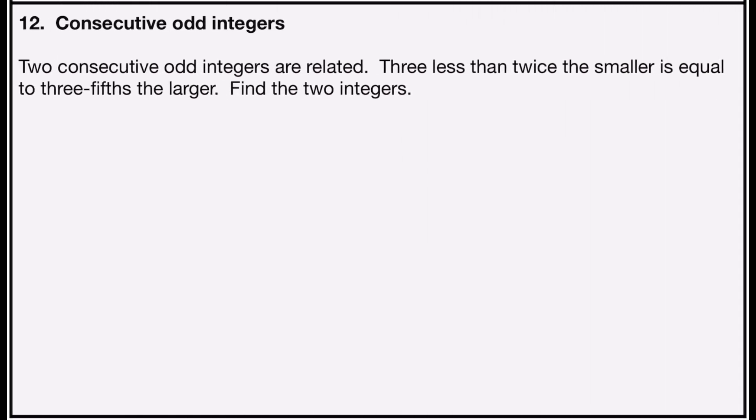Problem number 12 is consecutive odd integers. It says two consecutive odd integers are related: three less than twice the smaller is equal to three-fifths the larger. Find the two integers. Just like consecutive even integers, consecutive odd integers are also two spaces apart on the number line. So when I define the variables or expressions, it's exactly the same as for even integers. The first integer is x, and the next odd integer will be two away, or x plus two. Notice the two is an even number, but it represents the space on the number line, not the integer I'm looking for. Consecutive odd integers and consecutive even integers are both two apart, and they're always defined the same way.